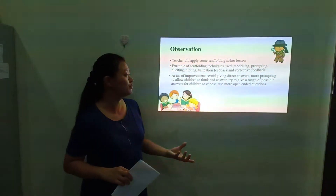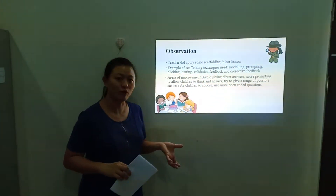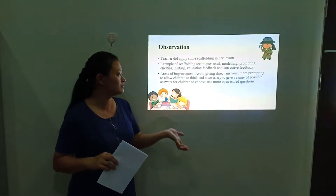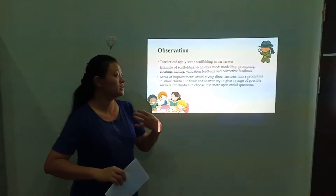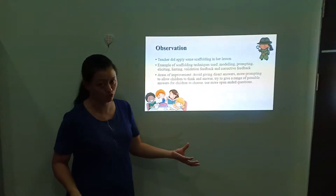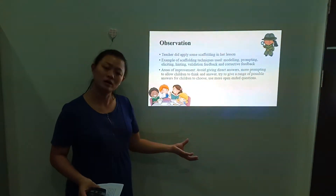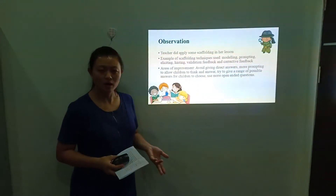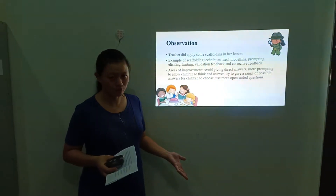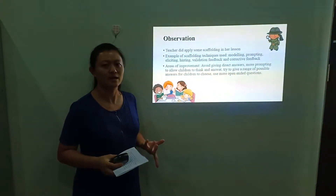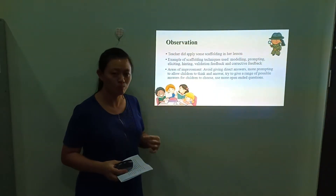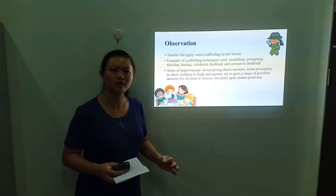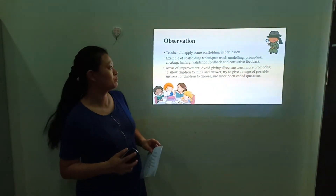However, there are some areas for improvement. Teachers need to avoid giving direct answers. Instead, teachers can prompt children to think and answer themselves, and can try giving a range of possible answers for children to choose from. For example, instead of saying 'bedroom,' the teacher could ask, 'Is it a living room or a bedroom?' This way, children will be able to think and process. Teachers also need to use more open-ended questions to challenge children to think and progress.